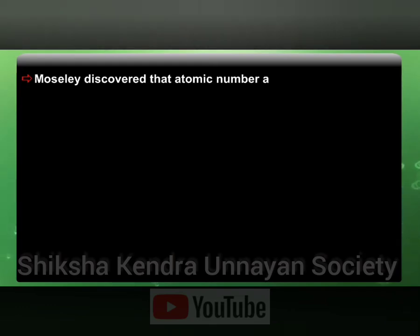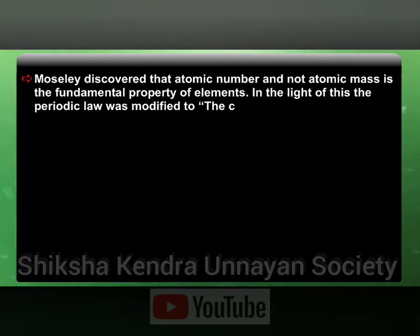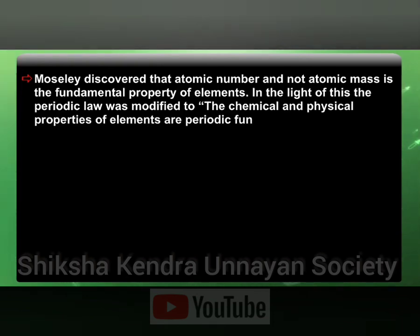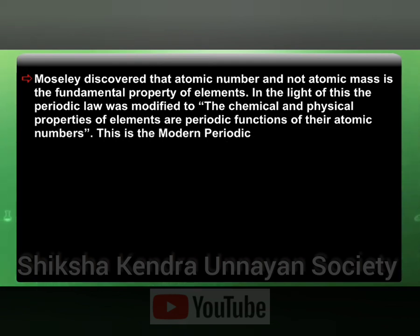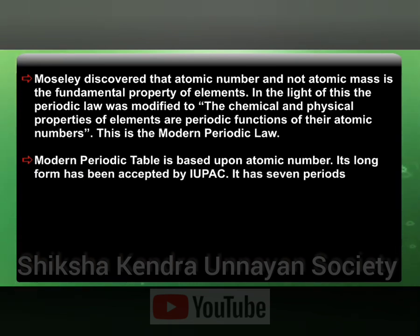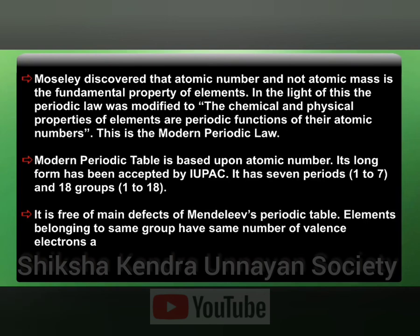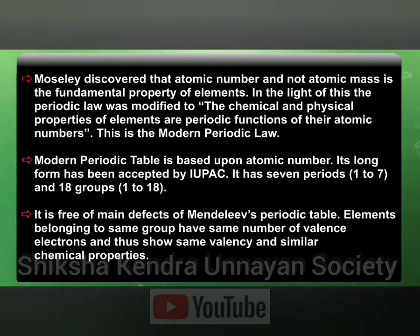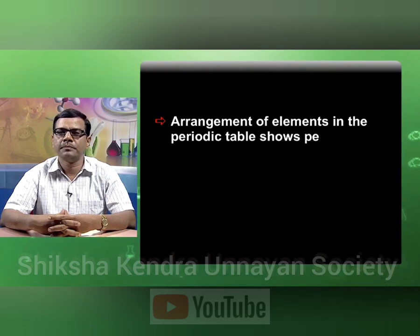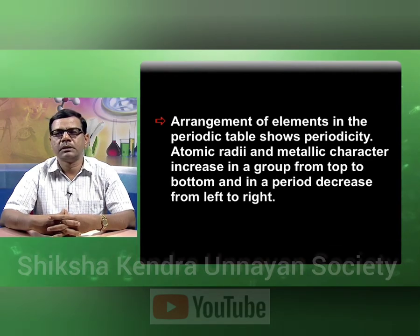Moseley discovered that atomic number and not atomic mass is the fundamental property of elements. In light of this, the periodic law was modified: the chemical and physical properties of elements are a periodic function of their atomic numbers — this is the modern periodic law. The modern periodic table is based upon atomic number; its long form has been accepted by IUPAC. It has seven periods, numbered 1 to 7, and 18 groups, numbered 1 to 18. It is free of the main defects of Mendeleev's periodic table. Elements belonging to the same group have the same number of valence electrons, thus showing the same valency and similar chemical properties. Atomic radii and metallic character increase in a group from top to bottom, and decrease in a period from left to right.